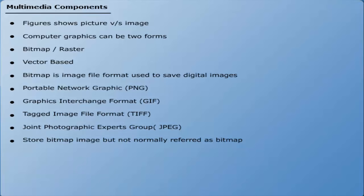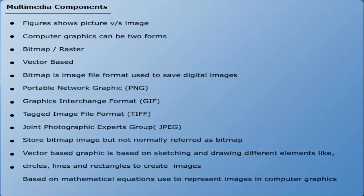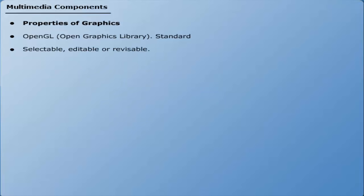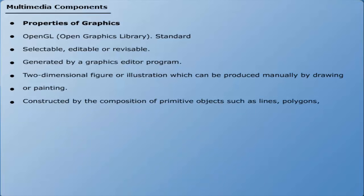Vector-based computer graphics is basically based on sketching or drawing different elements and objects like circles, lines and rectangles to create an appropriate image. This is all based on mathematical equations used to represent images in computer graphics. Graphics standards mainly include OpenGL (Open Graphics Library). Graphics are usually selectable, editable or revisable, and are generally generated by a graphics editor program. Graphics are a two-dimensional figure or illustration which can be produced manually by drawing or painting. Graphics format is constructed by the composition of primitive objects such as lines, polygons, circles, curves and arcs.